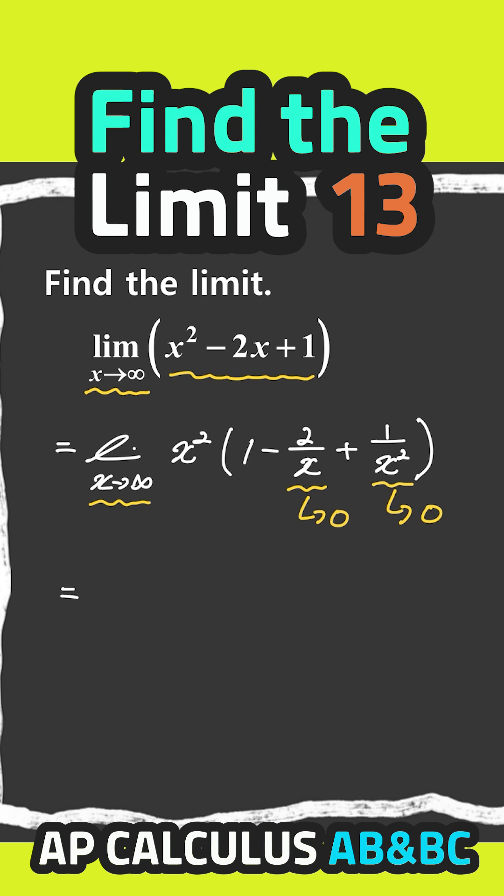So this limit is equal to, if we substitute infinity for x, that's infinity squared, 1 minus 0 plus 0. Infinity squared is just infinity, so infinity times 1 is equal to infinity.